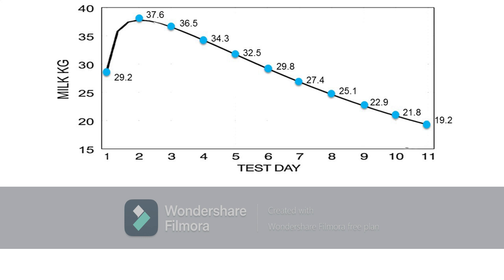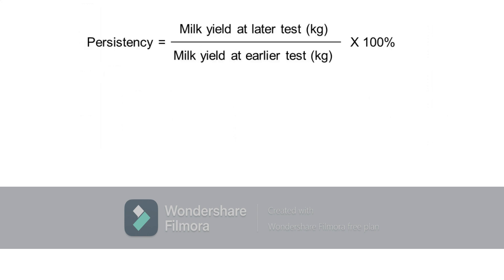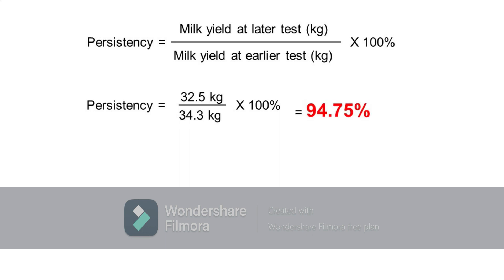Suppose that we want to determine the persistency from test day 4 to test day 5. Since the two tests are exactly 30 days apart, persistency can be simply calculated using the formula: Persistency equals milk yield in kilograms at the later test divided by milk yield in kilograms at the earlier test, multiplied by 100%. Therefore, persistency from test day 4 to test day 5 equals 32.5 kg divided by 34.3 kg times 100%, which equals 94.75%.